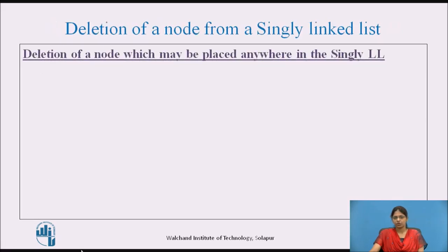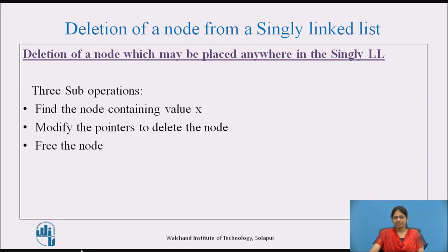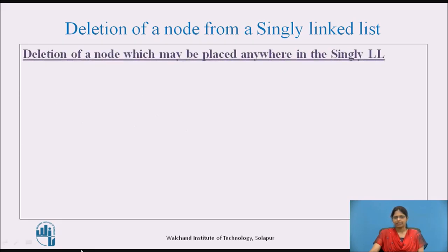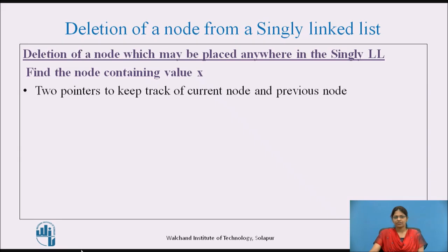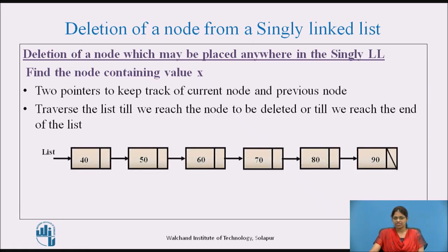Deletion of a node placed anywhere in the singly linked list involves three sub-operations: find the node containing value x, modify the pointers to delete the node, and free the node. To find the node containing value x, we need two pointers to track the current node and the previous node, and traverse the list until we reach the node to be deleted or the end of the list. In this example, the task is to delete the node with value 80.